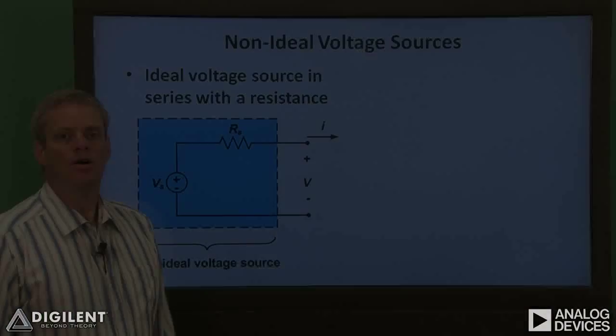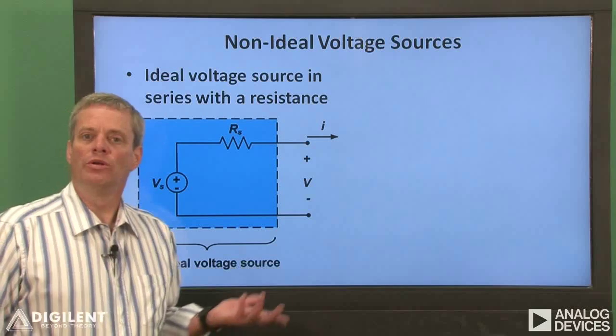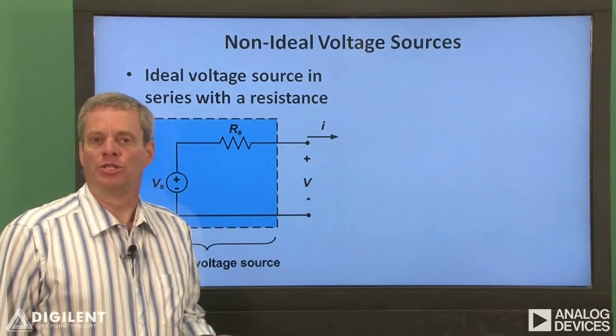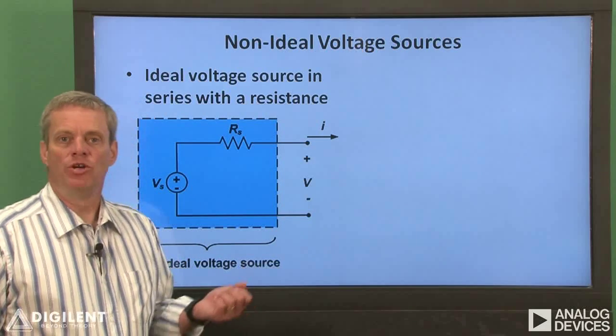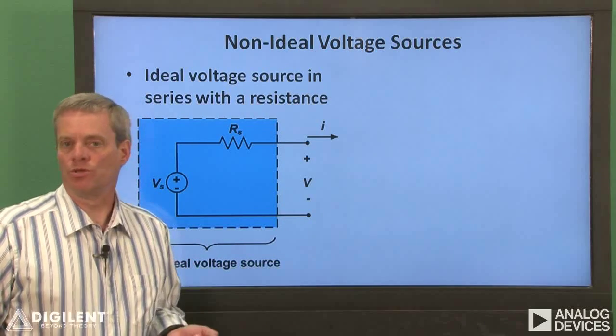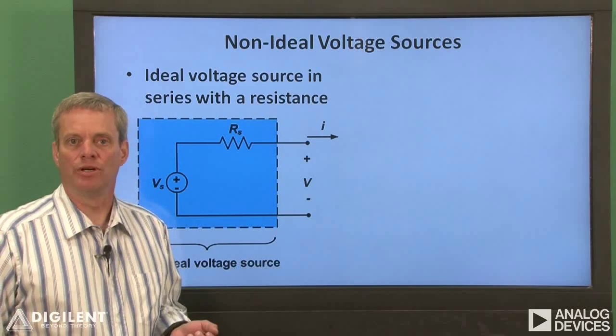In this tutorial, we will do some tests to determine the power supply limitations on the Analog Discovery. We'll also explore the limitations of the voltmeters on both the Analog Discovery and our DMM. For now, we'll only worry about voltage sources since we have no actual current sources available to us.